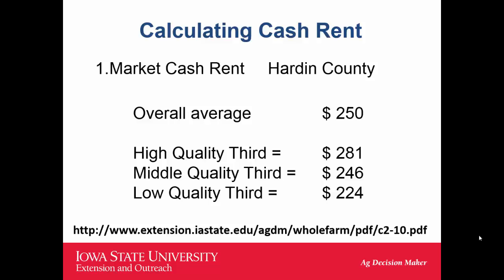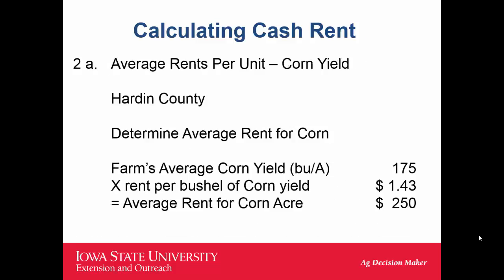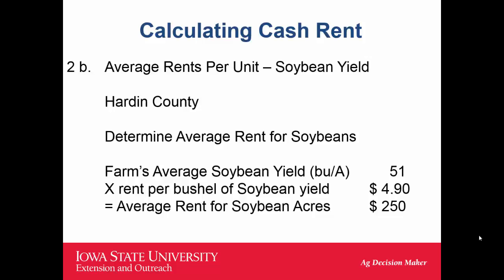The overall rent in Hardin County is about $250, with high quality around $280 and low quality around $225. Taking the county rent of $250 divided by the county corn yield of 175 bushels, tenants are paying around $1.43 per bushel of corn raised toward rent. Doing the same for beans: $250 divided by 51 bushels means tenants are paying about $4.90 of every bushel toward rent. With beans near $9, doubling that gets to about $9.80, meaning landlords are taking about half the bean revenue without paying any inputs.